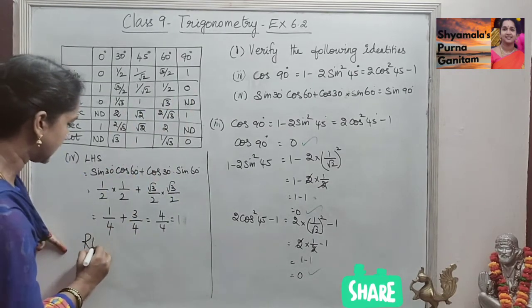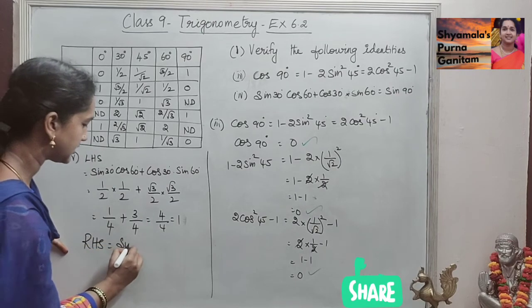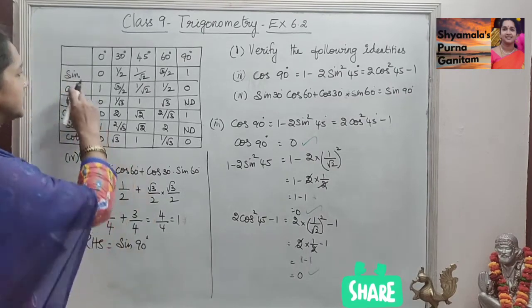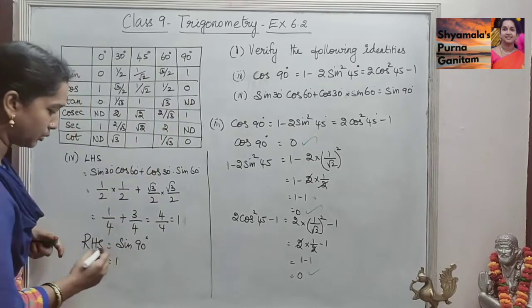RHS is sin 90°, so sin 90° is 1, is equal to 1.